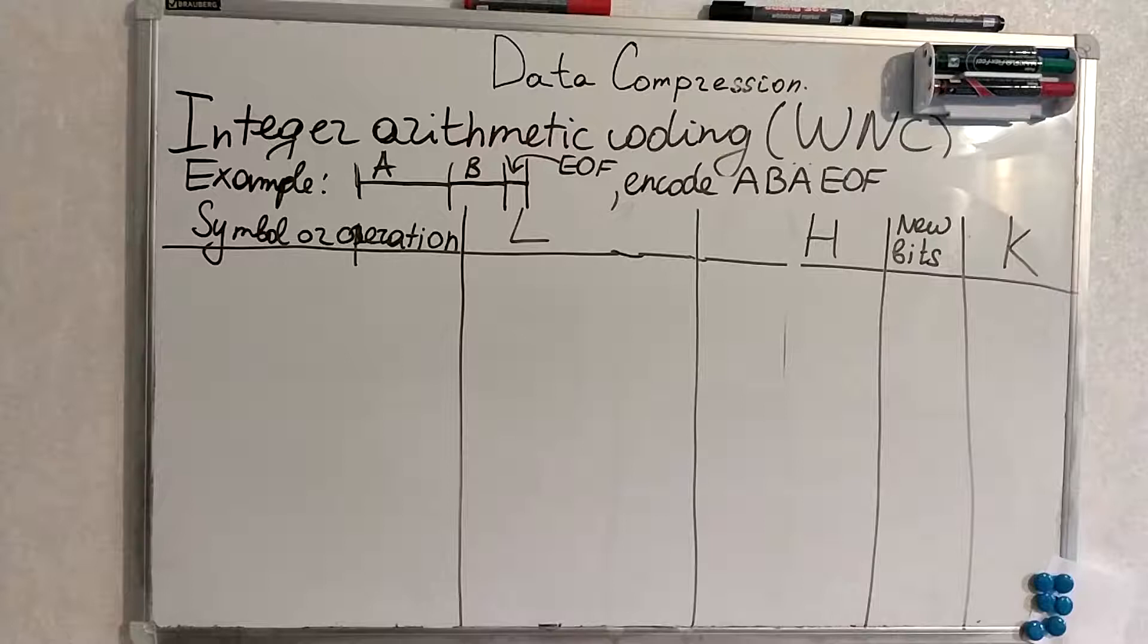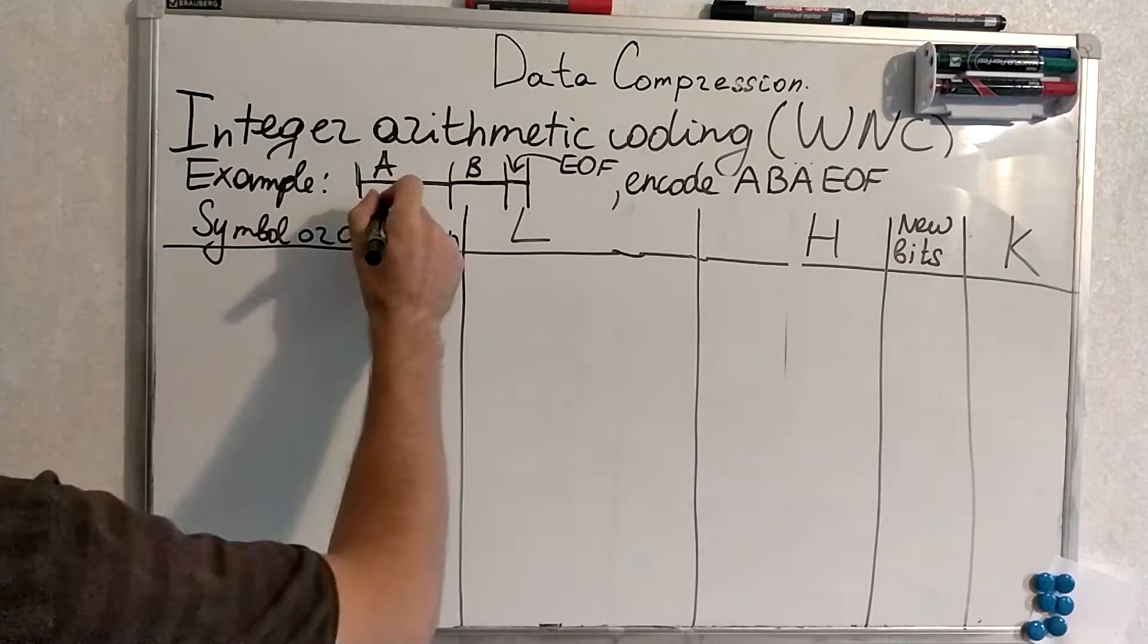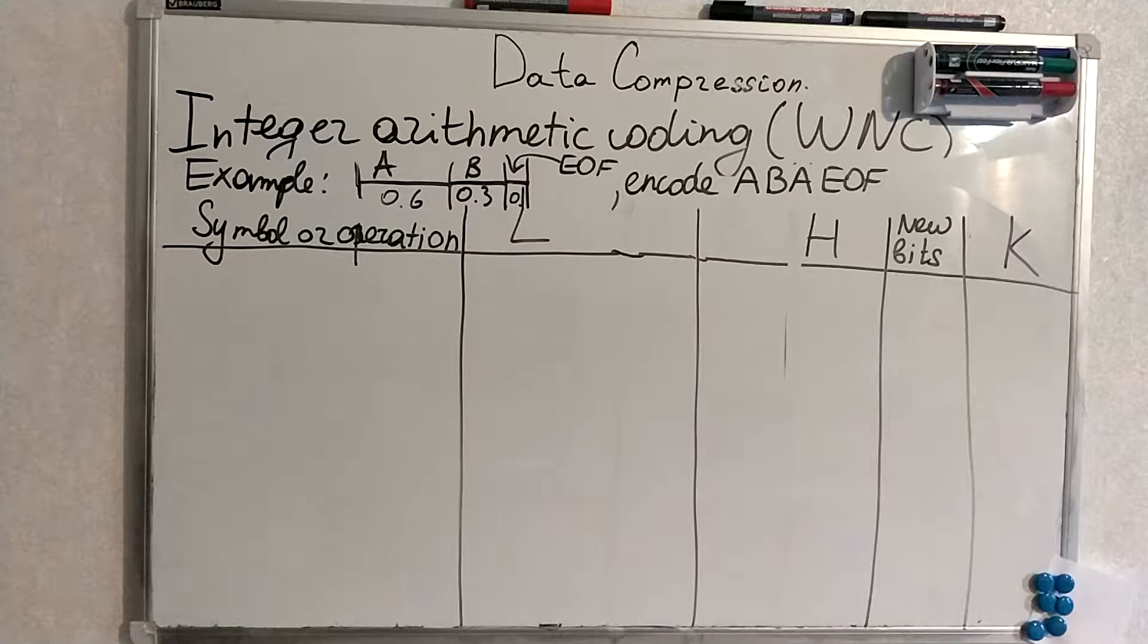So, let's start. We have to encode this sequence. And we have such probabilities, 0.6, 0.3 and 0.1. Okay. Next symbol is A, right?